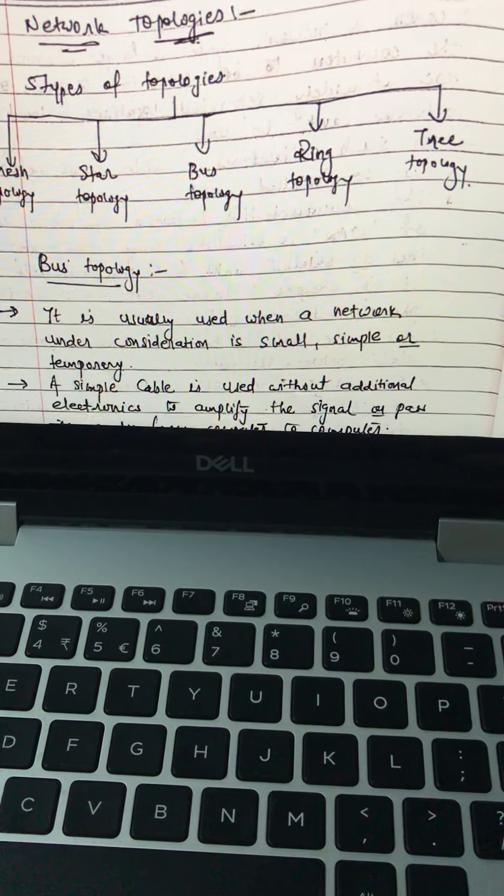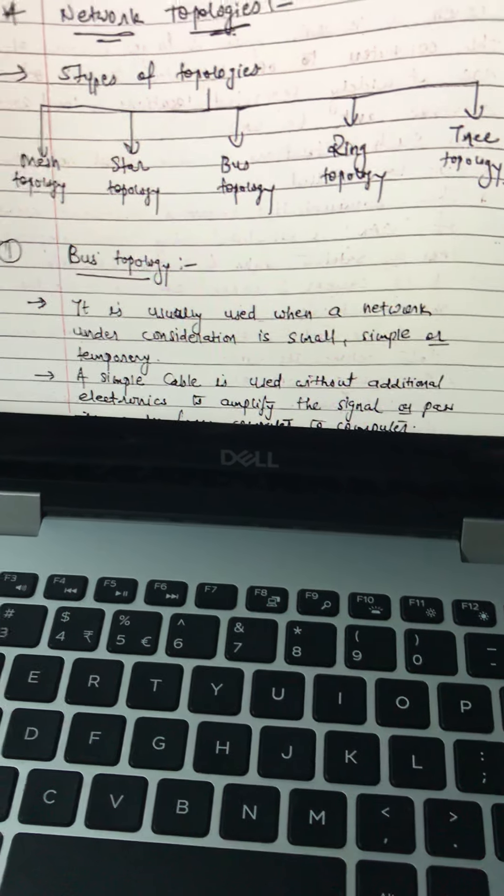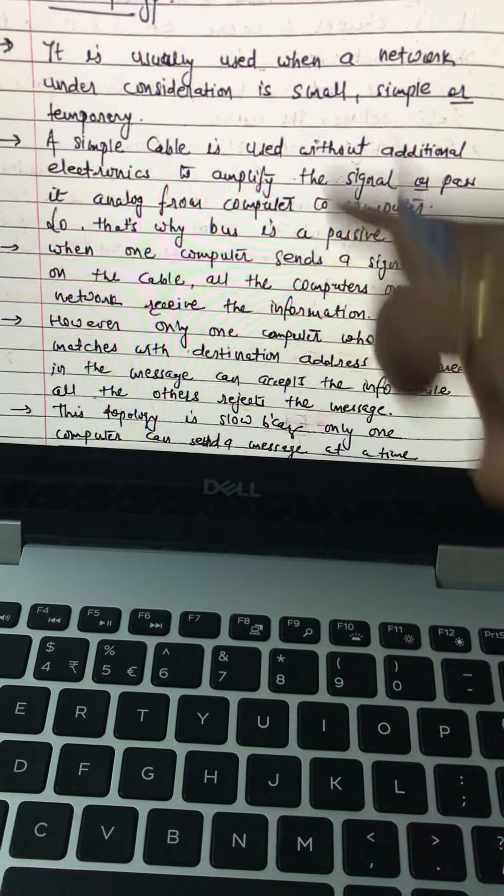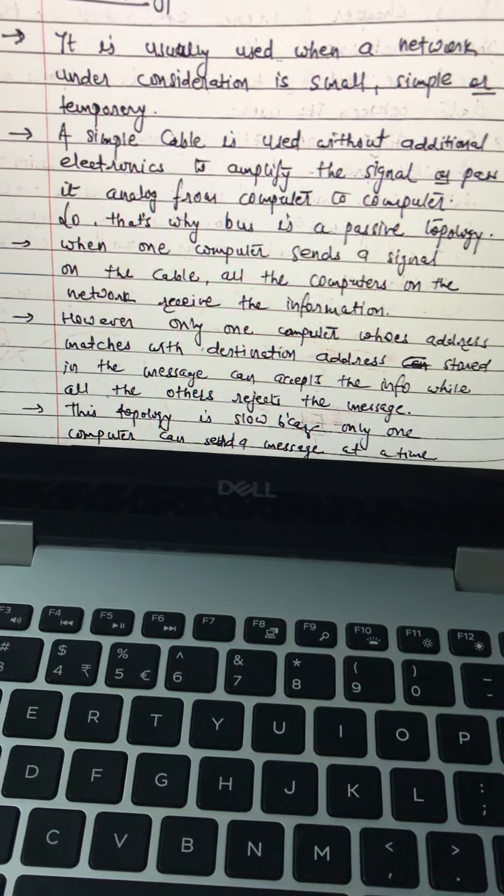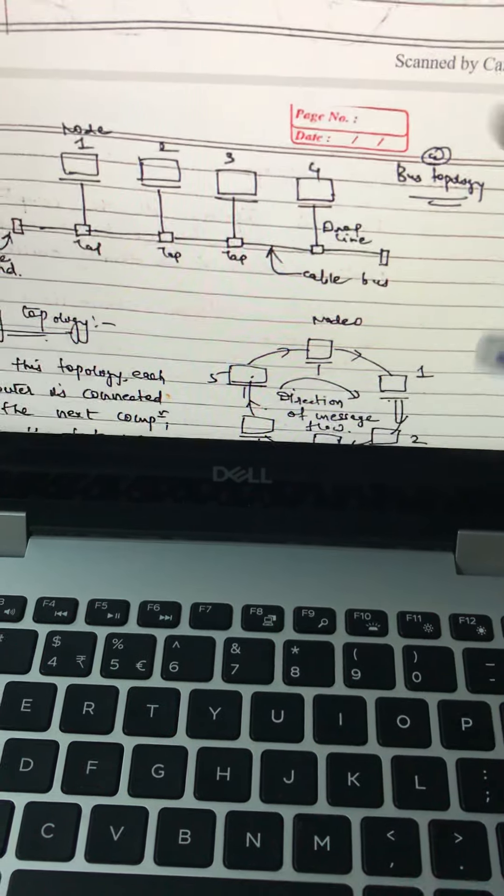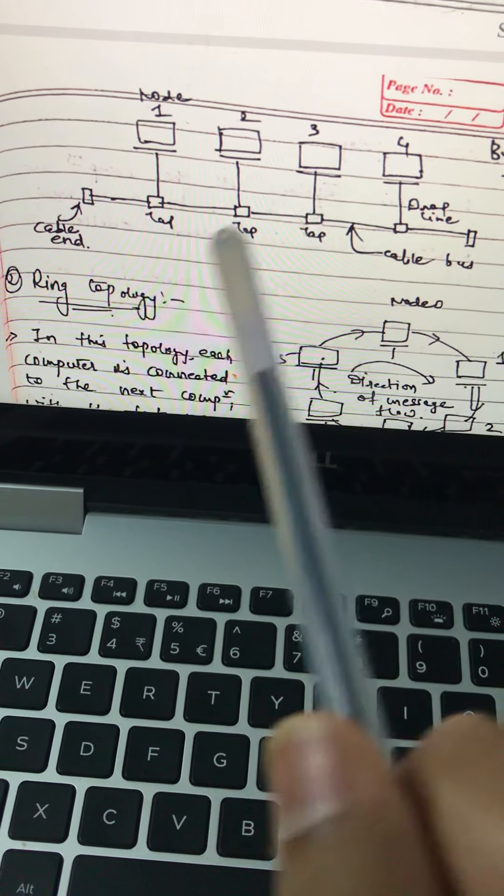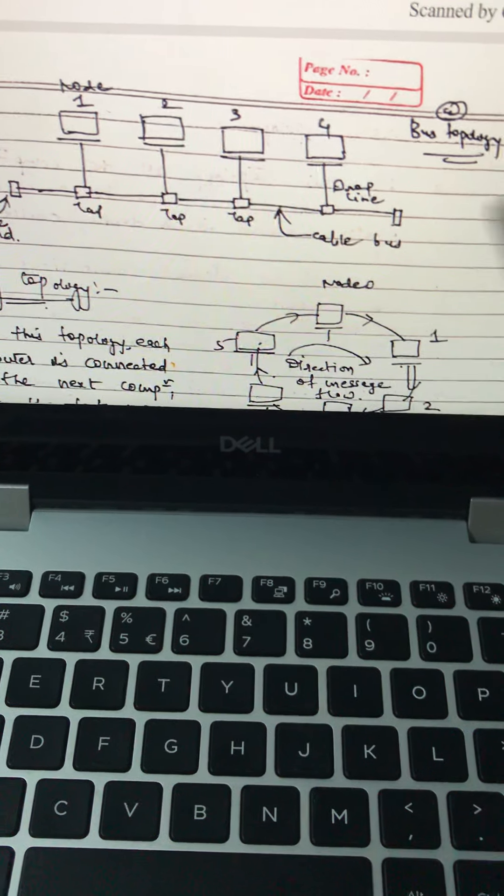Connections of the computers for the internet connectivity. So let's start from the bus topology. It is usually used when a network under consideration is very small, simple, and temporarily used. See, it is this kind of cable end to cable end and there are taps between them and each and every computer is connected with it.